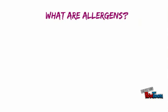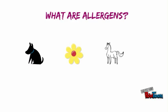Allergens are characterized as innocuous substances which can include dog dander, dust, pollen, etc., that we normally encounter but for unknown reasons are recognized by the immune system as dangerous.